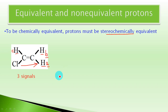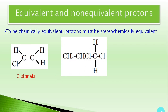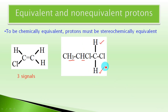Here is another interesting example: 1,2-dichloropropane. In this compound, C3 has 3 hydrogen atoms, C2 has 1 hydrogen atom, and C1 has 2 hydrogen atoms. The question is: how many NMR signals will this give? The 3 hydrogen atoms on C3 appear to form an equivalent set, giving one signal. The hydrogen on C2 has a different electronic environment and gives a different signal B.